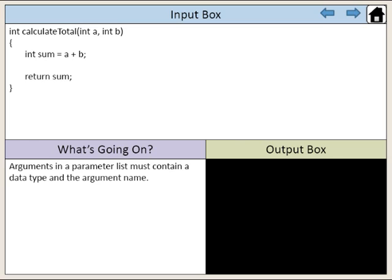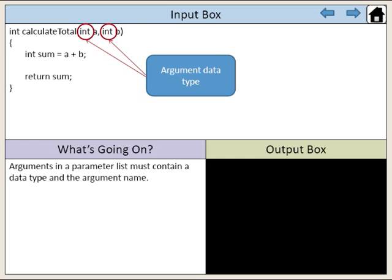Arguments in a parameter list must contain a data type and an argument name. Int is the argument data type of both of our arguments.